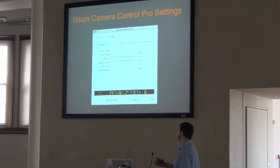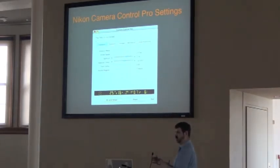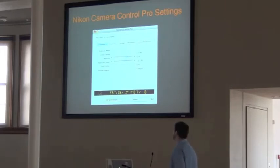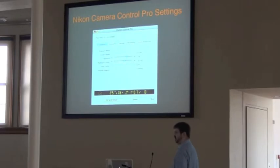If you go above f16, the images weren't quite the quality we wanted. And below, it was different — I'm not sure why. You would think that above that you'd get more depth of field, but for some reason f16 really worked the best. And then we would change the exposure compensation as we went along.